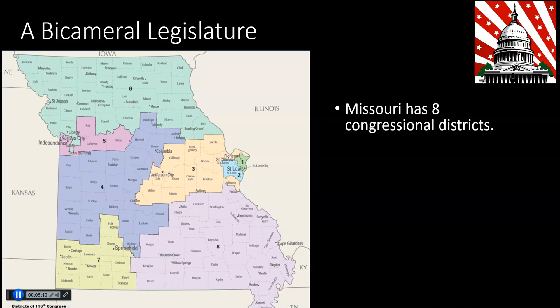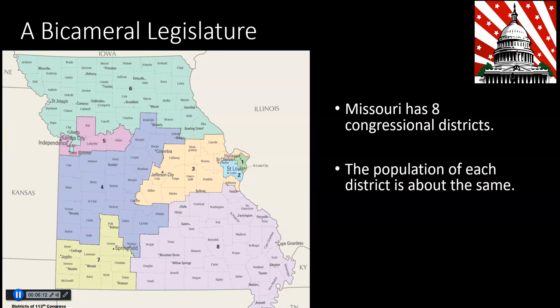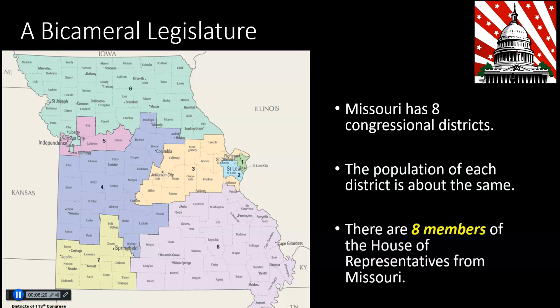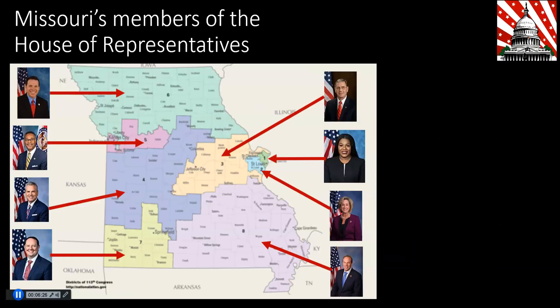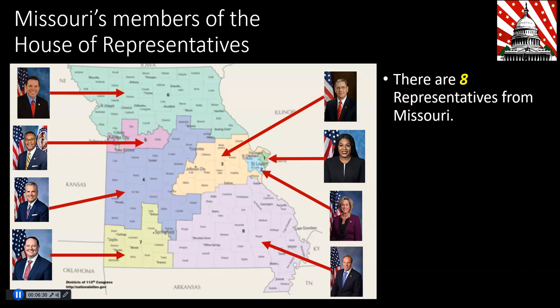Missouri has eight congressional districts. The population of each district is about the same, even though they are different sizes on the map. There are eight members of the House of Representatives from Missouri, and here we can see those eight members with pictures of them. Cori Bush is the representative for most students watching this, and Blaine Luetkemeyer represents district three.